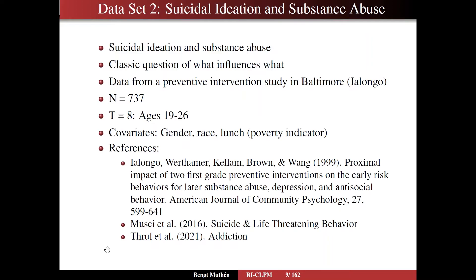The second dataset deals with suicidal ideation and substance abuse and dependence, which are the two main outcome variables for a cross-lagged panel model. This corresponds to the classic question: what influences what — what is cause and what is effect? We use data from a preventive intervention study in Baltimore with 737 people, eight time points, and ages 19 to 26, measured once a year. References include Ayo-Longo and others in the American Journal of Community Psychology, Musci's 2016 article, and Thrall's 2021 article in Addiction.